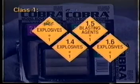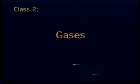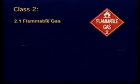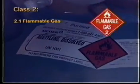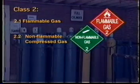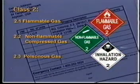Explosives include products such as model rocket engines, fireworks, small arms ammunition, and dynamite. Class 2: gases. Class 2 is broken down into three divisions. Division 2.1 is flammable gas, such as acetylene. Division 2.2 is non-flammable compressed gas, such as nitrogen. Division 2.3 is poisonous gas, such as chlorine.